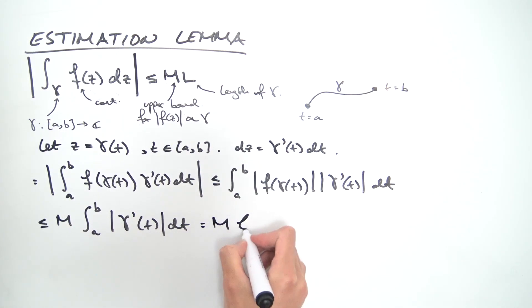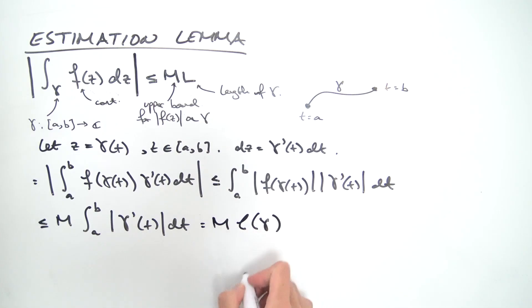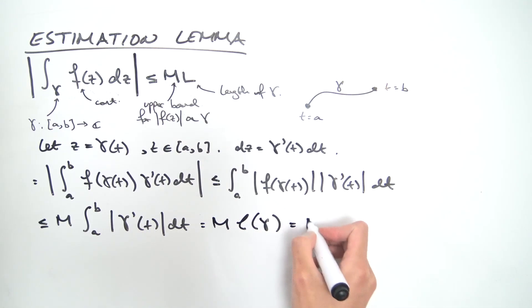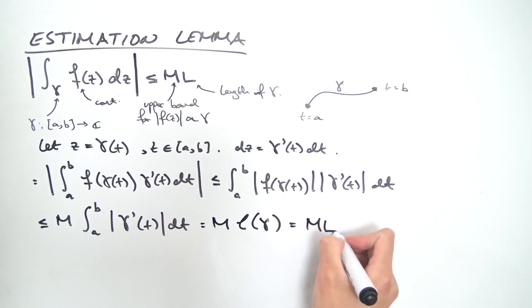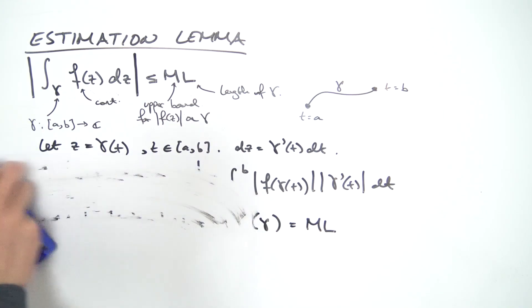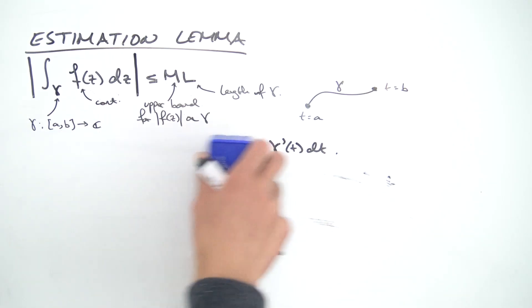This integral equals the length of gamma, which we define as L. So we get M times L, and that's how you prove the ML inequality - quite simple.